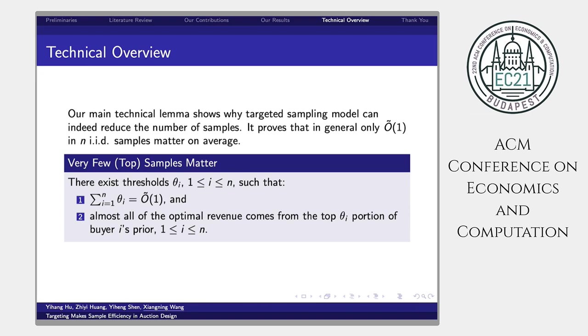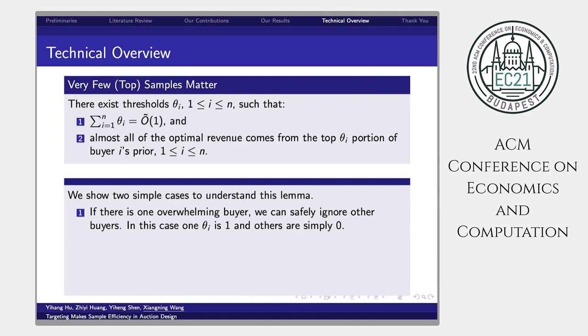To illustrate this lemma, we show two simple cases to understand this lemma. First, if there is only one overwhelming buyer, we can safely ignore all other buyers. In this case, only one ζi is O(1), and other ζi's are simply 0. Then, the summation of all ζi is O(1), which is satisfied.